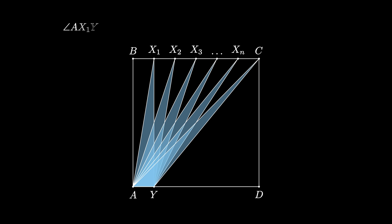Consider the angles AX1Y, AX2Y, AX3Y, and so on up to AXnY and ACY. What happens if we add up the arc lengths of each of these angles? What do we get? Pause the video and think about the question before I reveal the answer in 4 seconds.